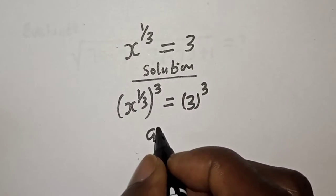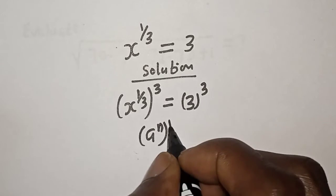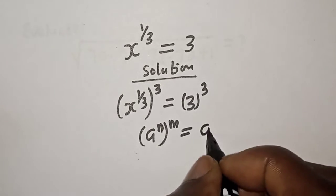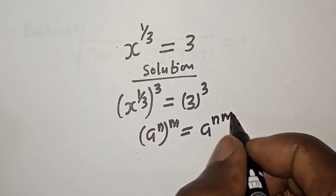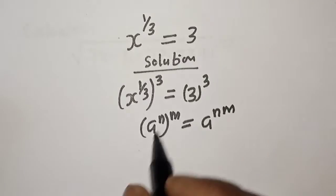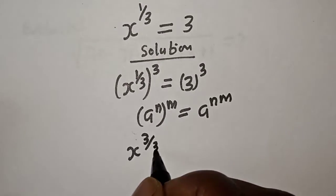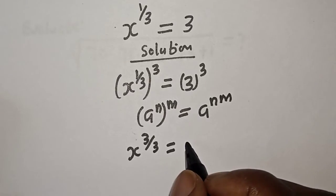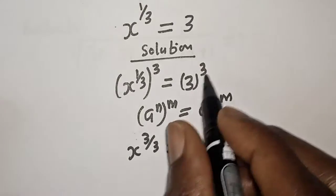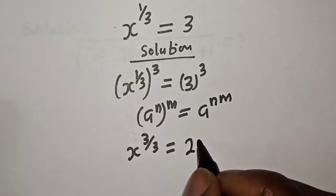Take note of this rule that a raised to power n to the power of m is equal to a raised to power nm. And this is x raised to power 3 over 3 is equal to 3 raised to power 3 is 27.